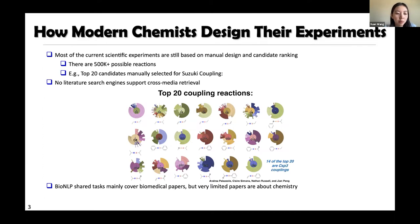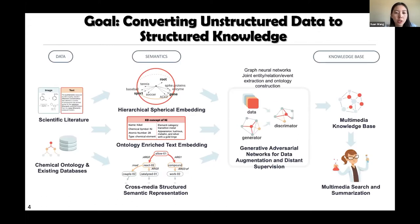In the NLP domain there are some shared tasks covering major challenges, but most are focused in the biomedical domain. For other scientific domains like chemistry, there is a lack of shared tasks and resources. Our overall goal is to convert unstructured text data into structured knowledge. In the first part, we will cover existing work and developed systems for extracting rich information from text. In the next part, we will cover how people use that knowledge to do multimedia search in scientific literature.